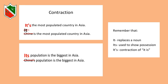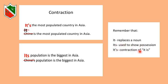For example: it's the most populated country in Asia — here apostrophe S means it is, so it's is a contraction of it is. In the second example: its population is the biggest in Asia — here there is no apostrophe, meaning it is showing possession. Its population means China's population. Remember: its replaces a noun and shows possession with no apostrophe, while it's is a contraction of it is.